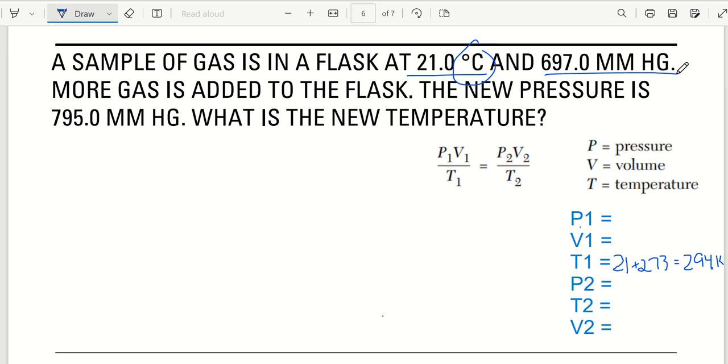This, 697 millimeters of mercury. That pressure or volume? That is pressure. Not always using that unit, but we did this time, and they absolutely can. Millimeters of mercury. More gas is added to the flask. The new pressure temperature is this. So 795 millimeters of mercury. What is the new temperature? So I'm finding this. Did the question mention volume? Nope. Cross it out. Do not use it.